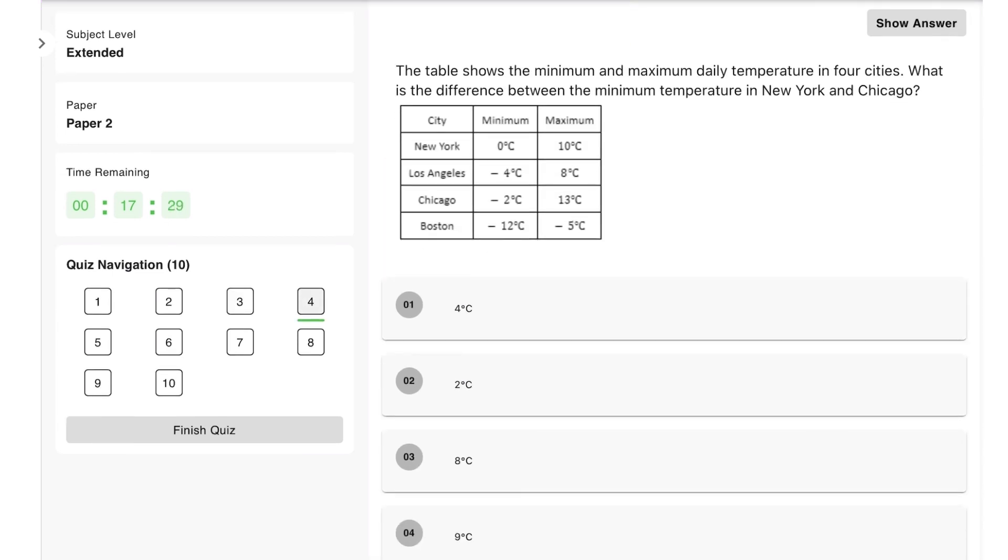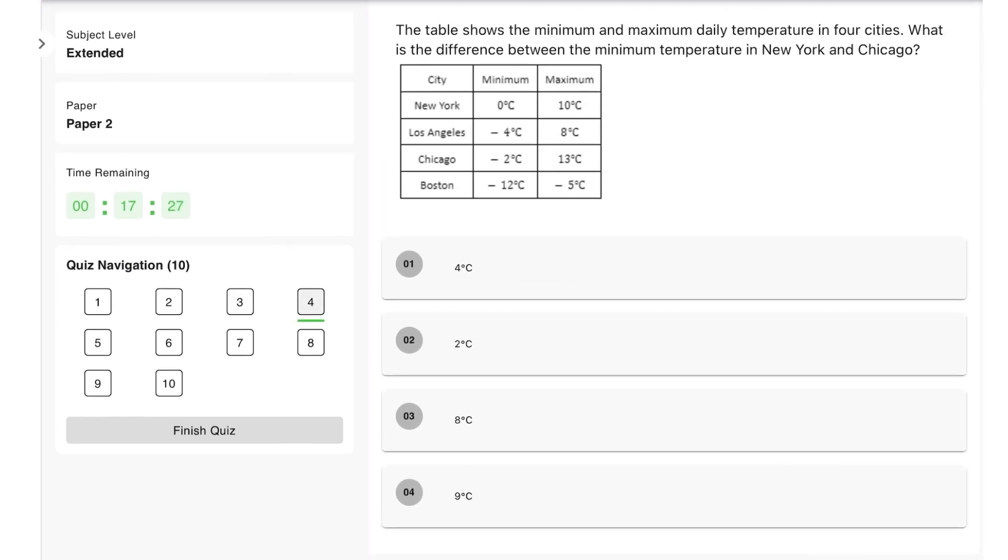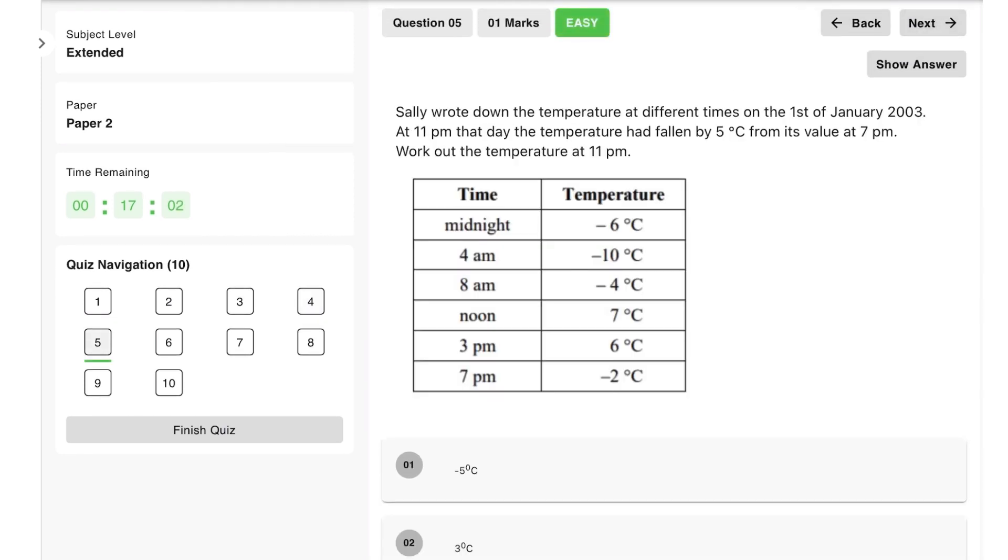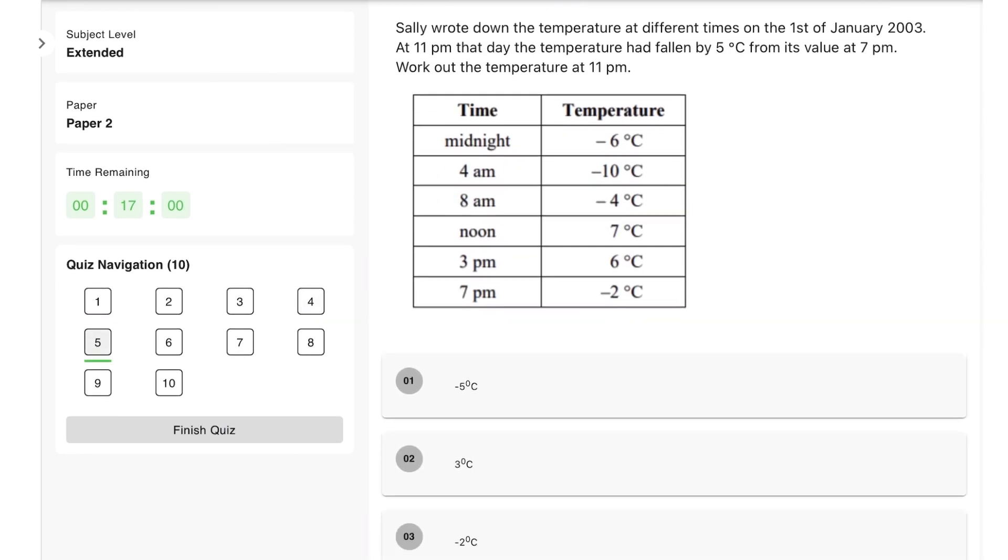Next, the table shows the minimum and maximum daily temperature in four cities. What is the difference between the minimum temperature in New York and in Chicago? We're looking at zero degrees and two degrees, so the temperature difference is therefore two degrees.